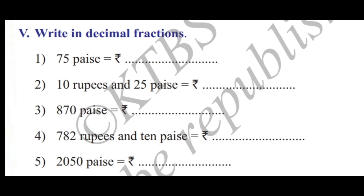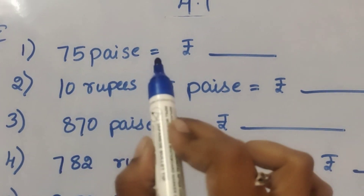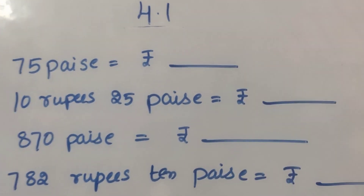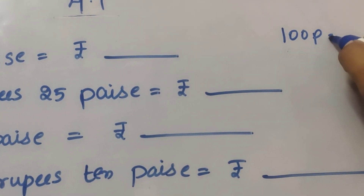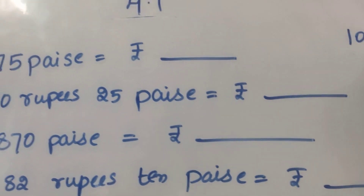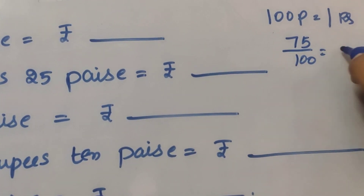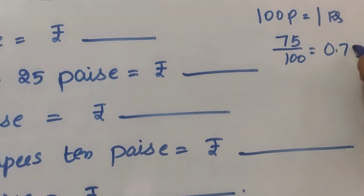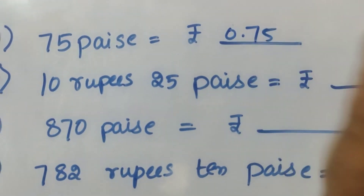Fifth section: Write in decimal fractions. First question: seventy-five paise is equal to how many rupees? We know that 100 paise equals one rupee. So, 75 paise = 75 by 100 = 0.75 rupees.